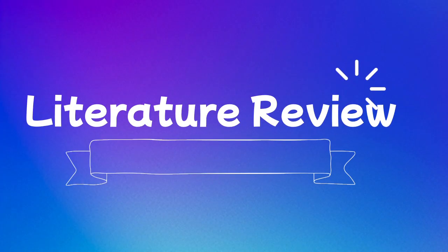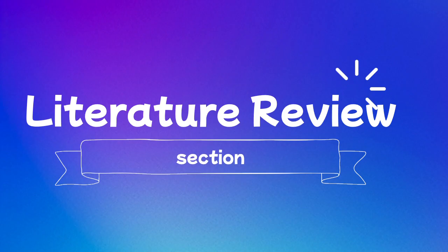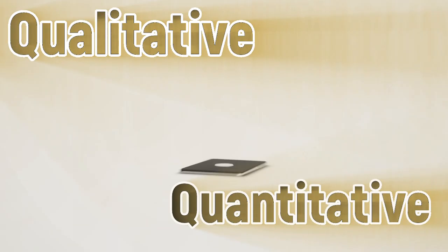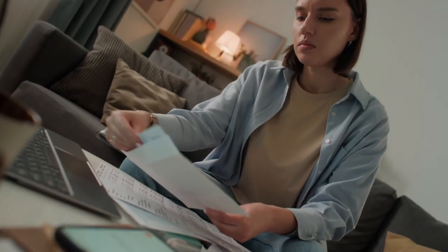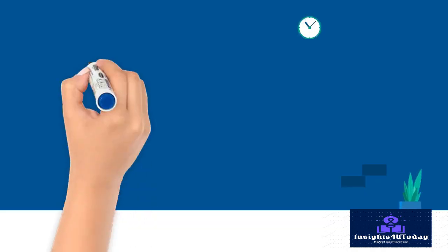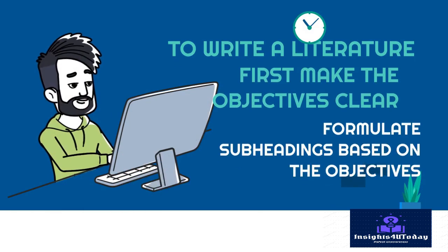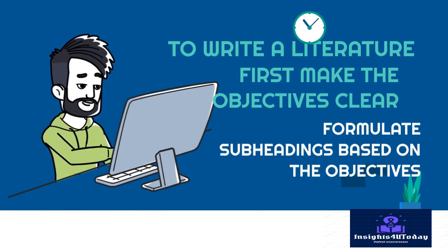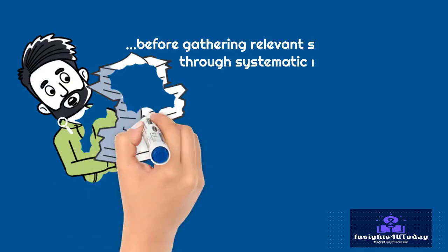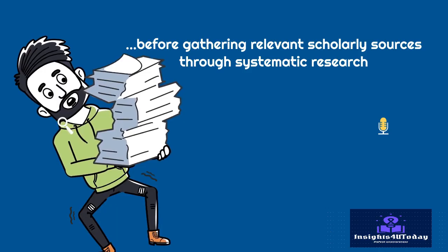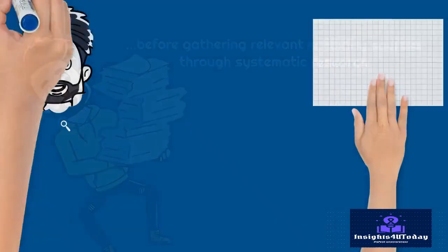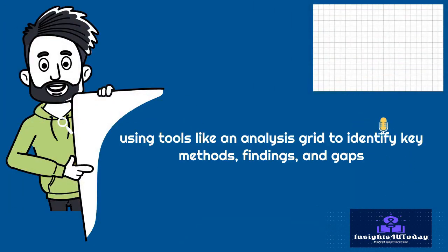Writing a literature review section is another important section, especially when you are doing qualitative or quantitative research, or even mixed methods. If your research paper is a systematic review, a literature review might not be necessary. Typically, to write a literature review, you first make the objectives of your research paper clear and formulate subheadings based on the objectives, before gathering relevant scholarly sources through systematic research. Then, analyze and summarize each paper using tools like an analysis grid to identify key methods, findings, and gaps.